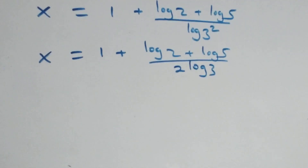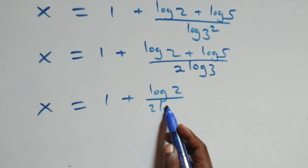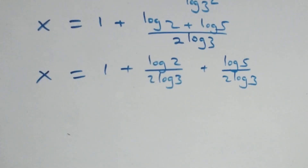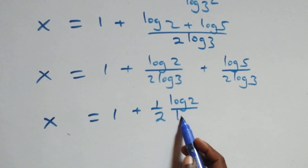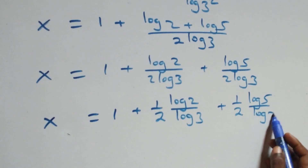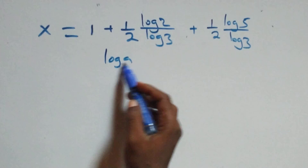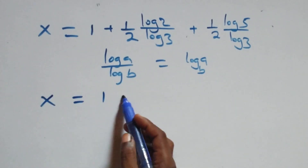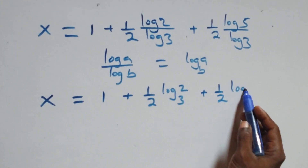We also separate this into two fractions. We have x equals to 1 plus log 2 over 2 log 3 plus log 5 over 2 log 3, which can also be written as x equals to 1 plus one half times log 2 over log 3 plus one half times log 5 over log 3. We apply change of base: log a over log b is the same thing as log a to base b. So we have x equals to 1 plus one half log 2 base 3 plus one half log 5 base 3.